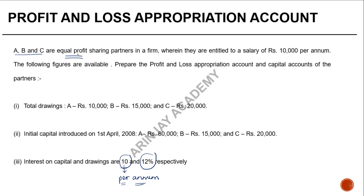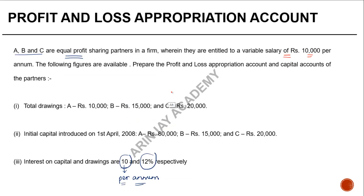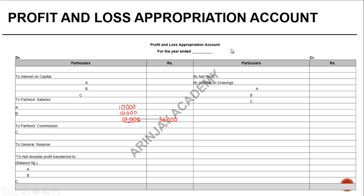We will proceed by putting in all entries in both accounts one by one. A, B, and C are equal profit sharing partners entitled to a salary of $10,000 per annum each. In the profit and loss appropriation account, we put in partner's salary: A $10,000, B $10,000, and C $10,000 — totalling $30,000. For this question, we have assumed this variable salary is a bonus claimed by all of them to the extent of $10,000 per annum. In the capital account, we credit variable salary of $10,000 each.